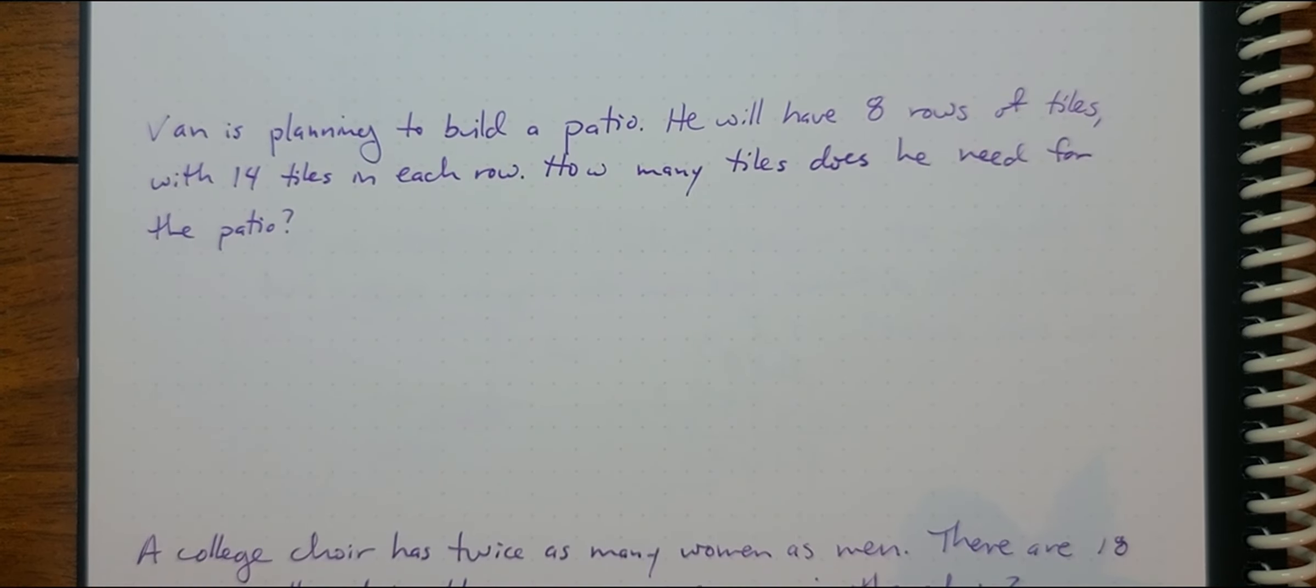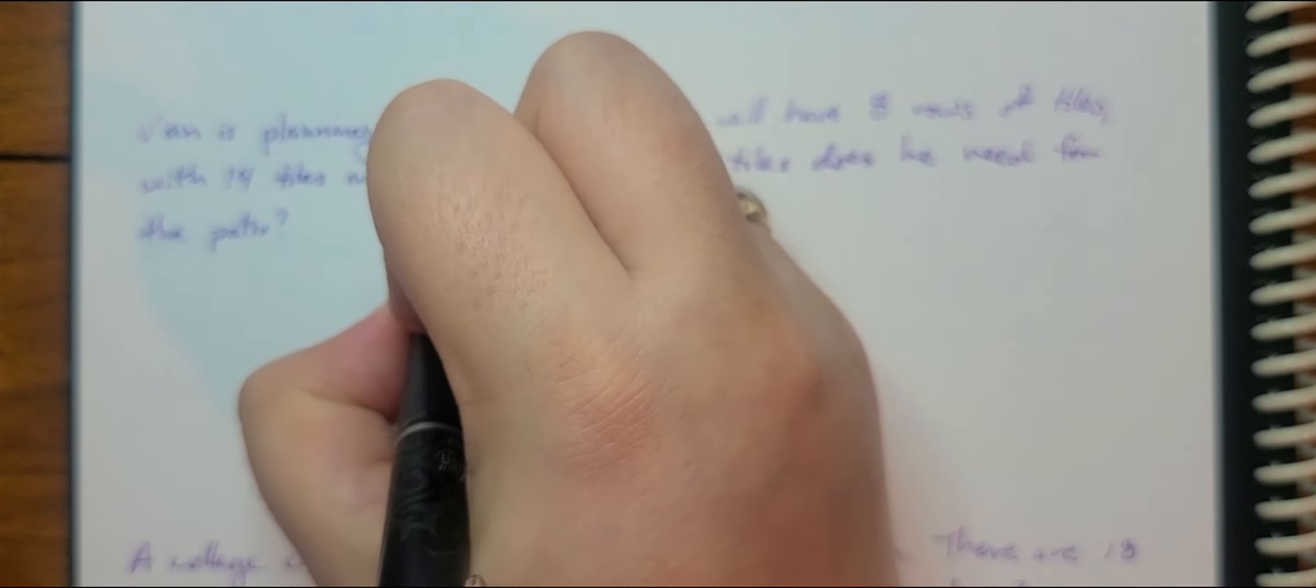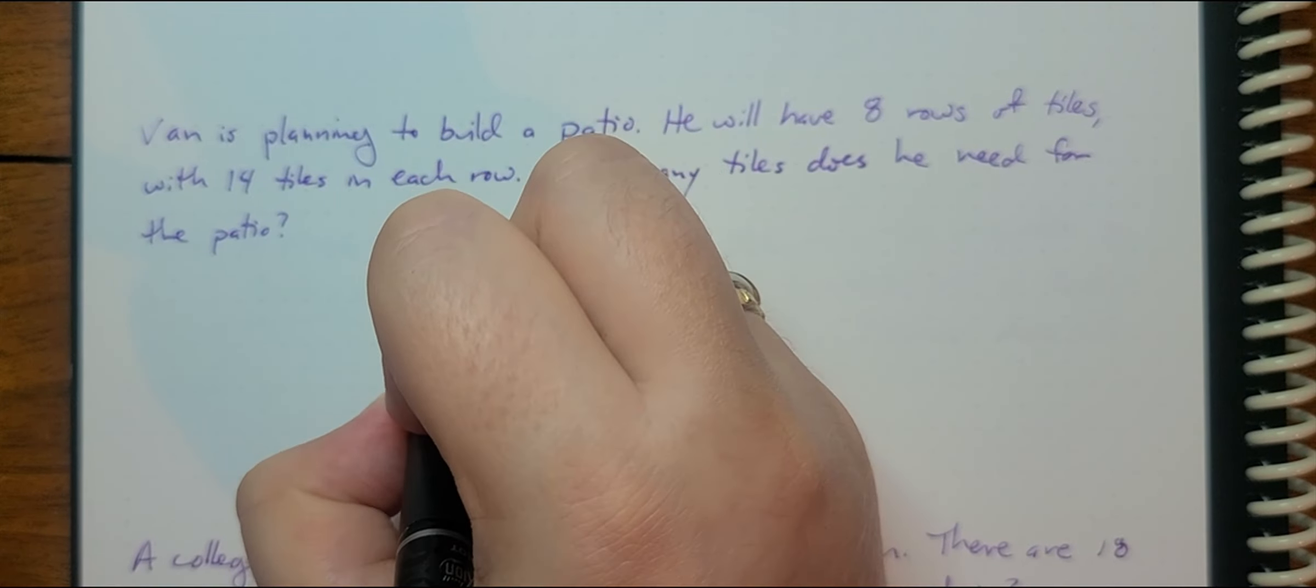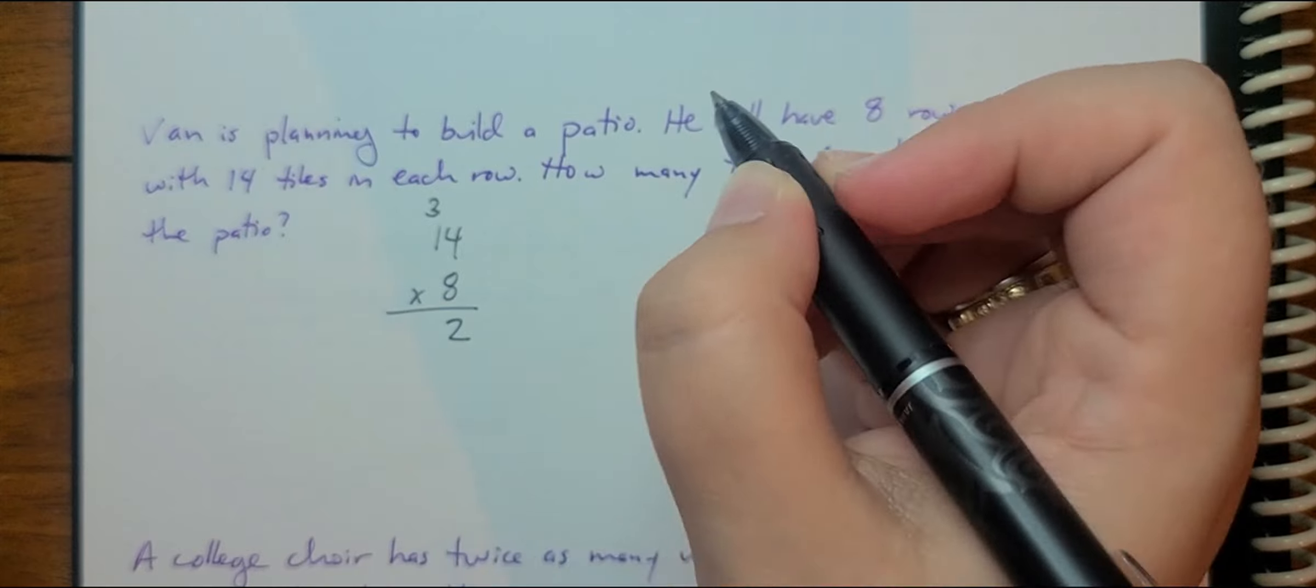Van is planning to build a patio. He'll have eight rows of tiles with 14 tiles in each row. How many tiles does he need for the patio? So he is going to take 14 times eight. Four times eight is 32.